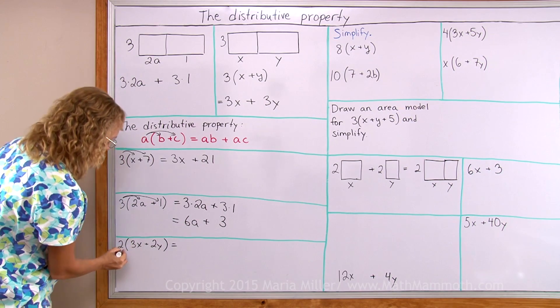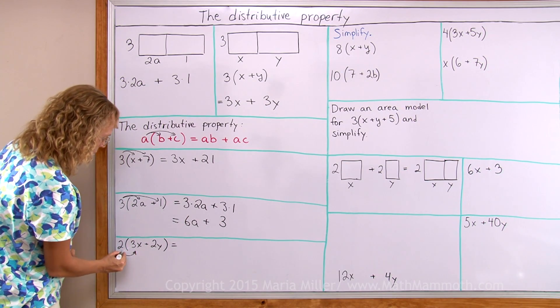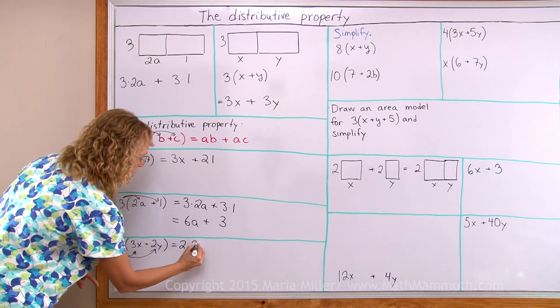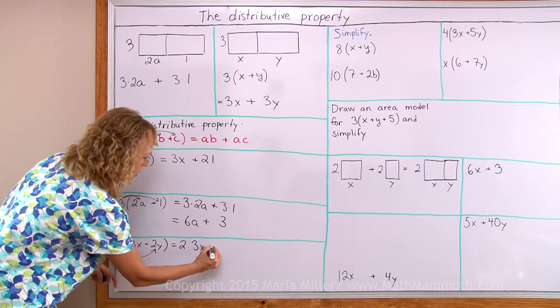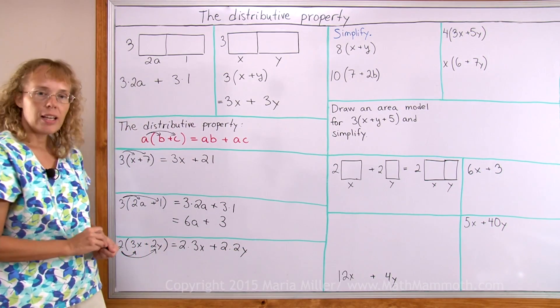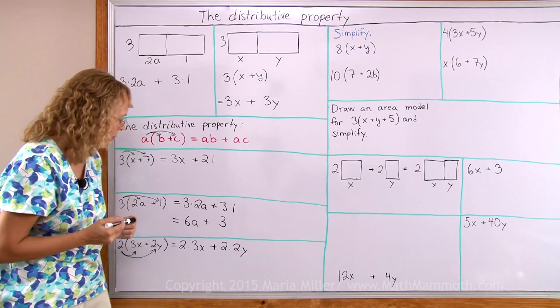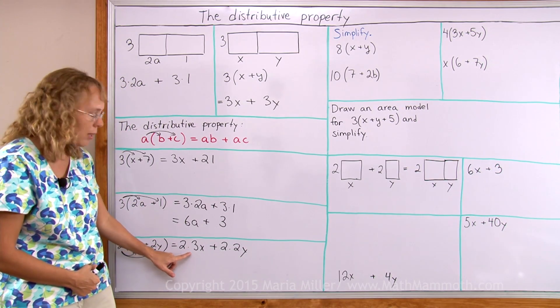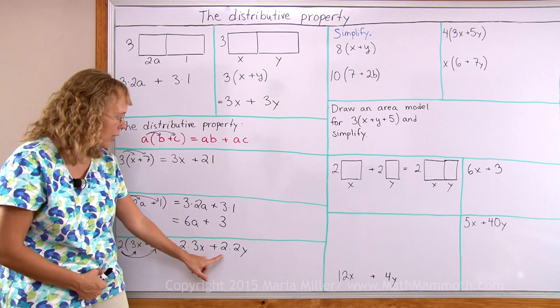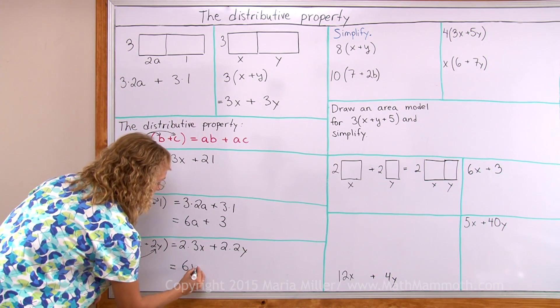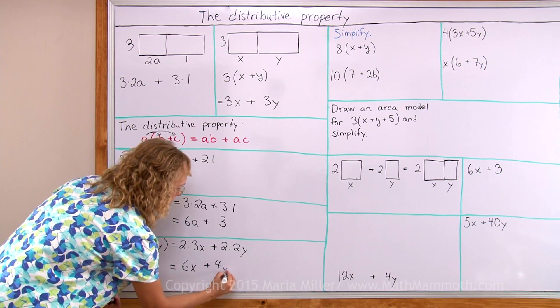Over here I do the same. 2 times this term and 2 times that term. So I get 2 times 3x and then add 2 times 2y. Now here I can simplify a little bit more. Because I can multiply here 2 times 3 in my head and here 2 times 2 in my head. So then I get 6x here and 4y there.